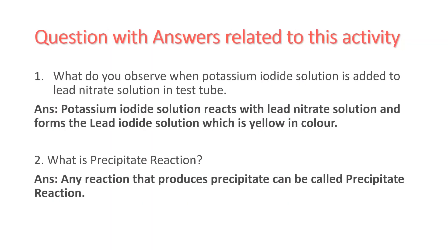Here some question answers related to this activity are given. First: what do you observe when potassium iodide solution is added to lead nitrate solution in a test tube? Potassium iodide solution reacts with lead nitrate solution and forms lead iodide precipitate which is yellow in color.